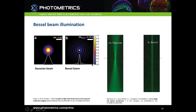Bessel beam illumination is another type of lightsheet involving changing the properties of the beam itself. A Gaussian beam is the standard, with its brightest point in the middle but a wide profile. The Bessel beam in contrast has a much thinner profile that propagates much further, giving effectively a longer lightsheet — but it comes with lobes that illuminate out-of-focus regions, compromising optical sectioning quality, degrading contrast and introducing photodamage. It's a trade-off to get a thin lightsheet with a larger field of view.